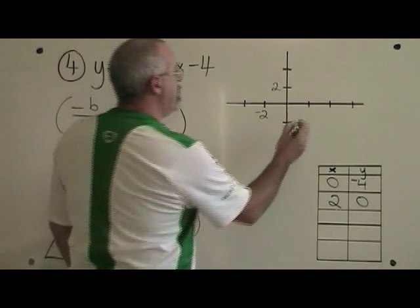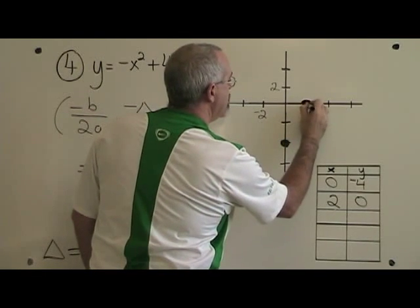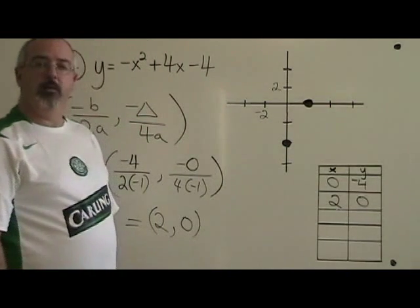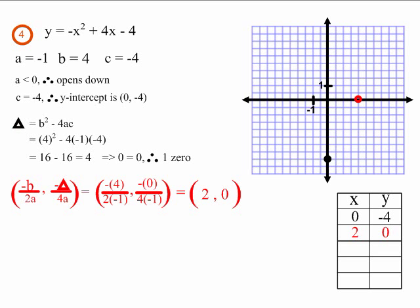Let's put this on the graph. 2, 0 with this scaling is here. This is how we find the vertex in example 4. This is what example 4 looks like after we find the vertex. Be sure to watch the next video in the process of graphing a parabola.